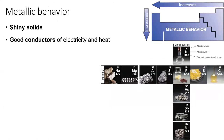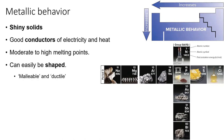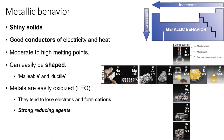Their delocalized electrons also allow them to conduct electricity and heat effectively. The metallic bonds within metals are relatively strong, giving them high melting and boiling points. Metals can also be easily shaped, because their delocalized electrons accommodate shape changes. Most importantly for chemists, metals are easily oxidized — they form positively charged cations.